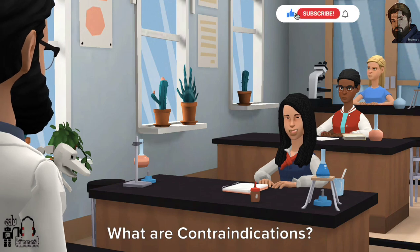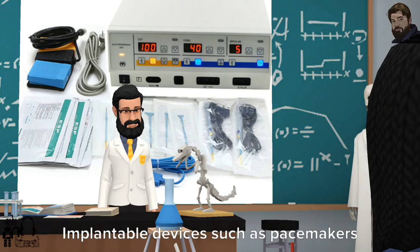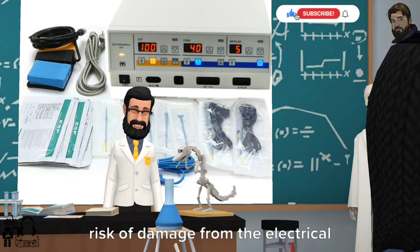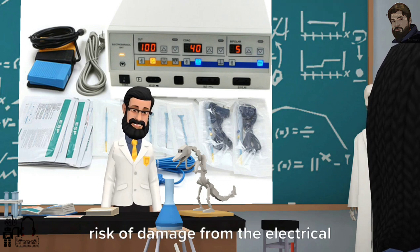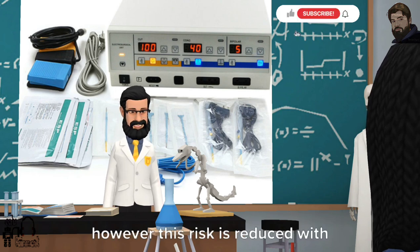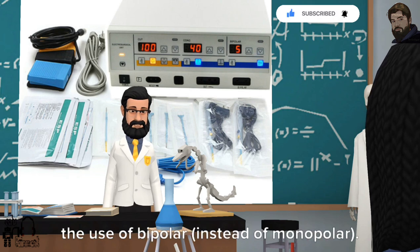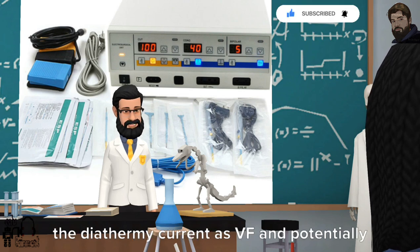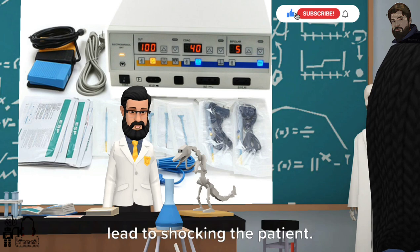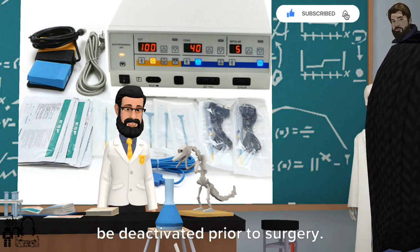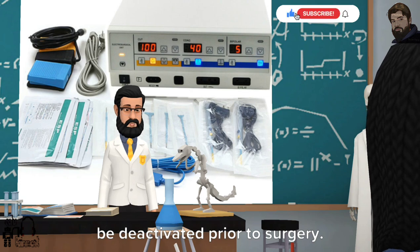What are contraindications? Implantable devices such as pacemakers and spinal cord stimulators are at risk of damage from the electrical current and diathermy. This can lead to failure of the device, however this risk is reduced with the use of bipolar instead of monopolar. Implantable defibrillators can also interpret the diathermy current as VF and potentially lead to shocking the patient. Consequently, such devices need to be deactivated prior to surgery.